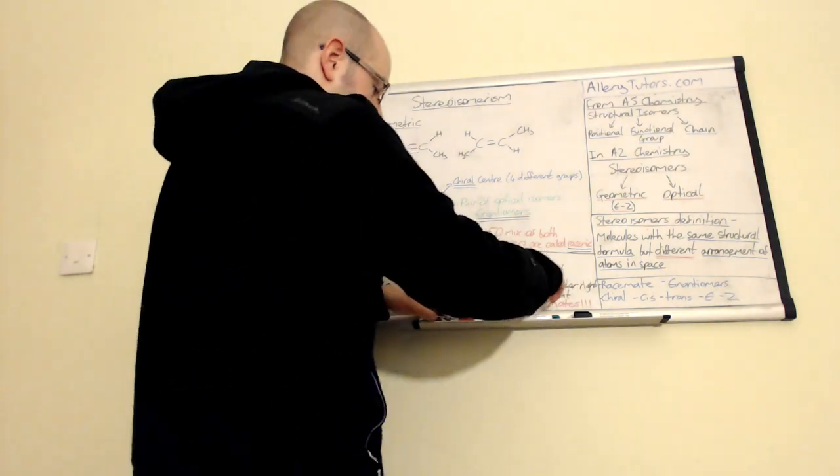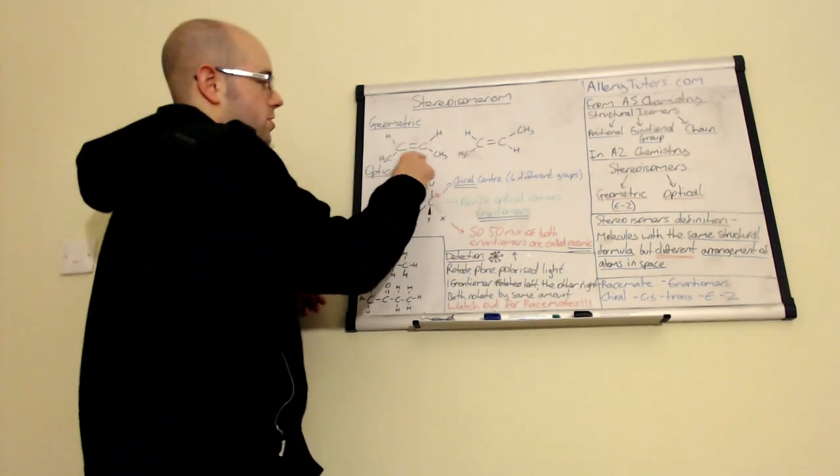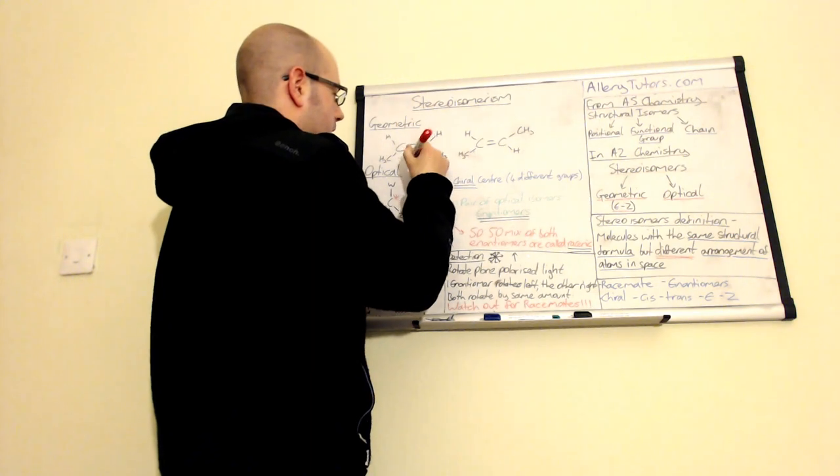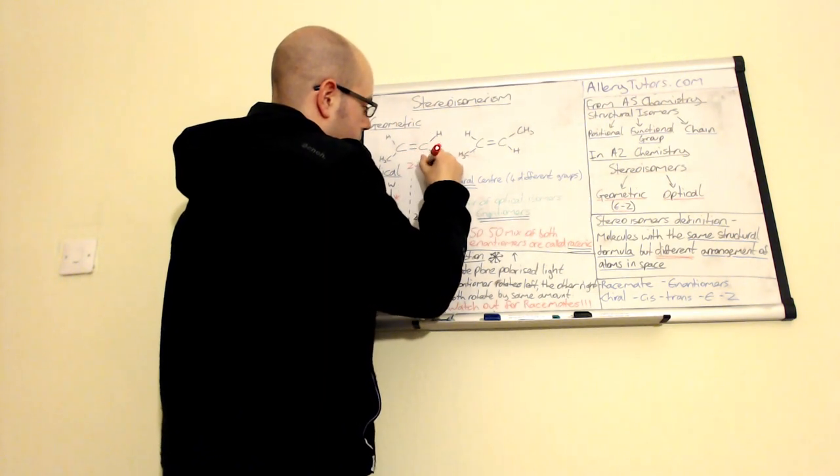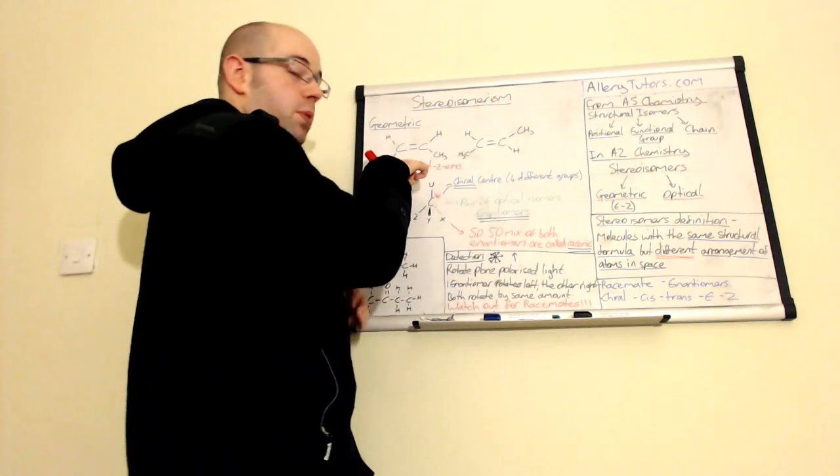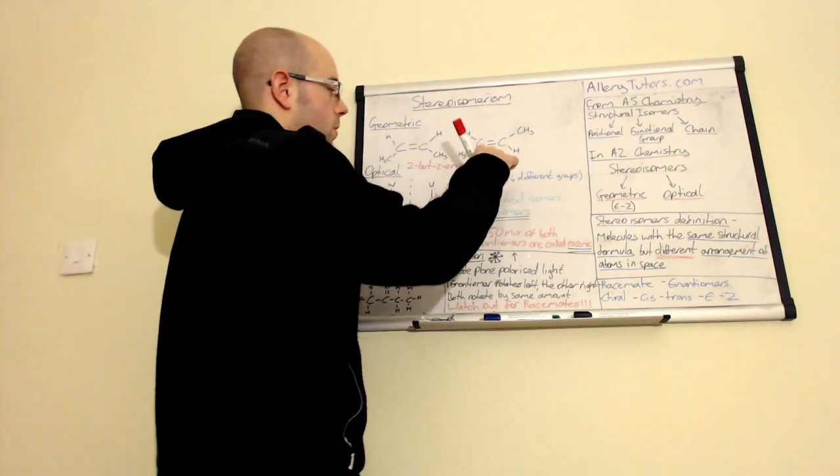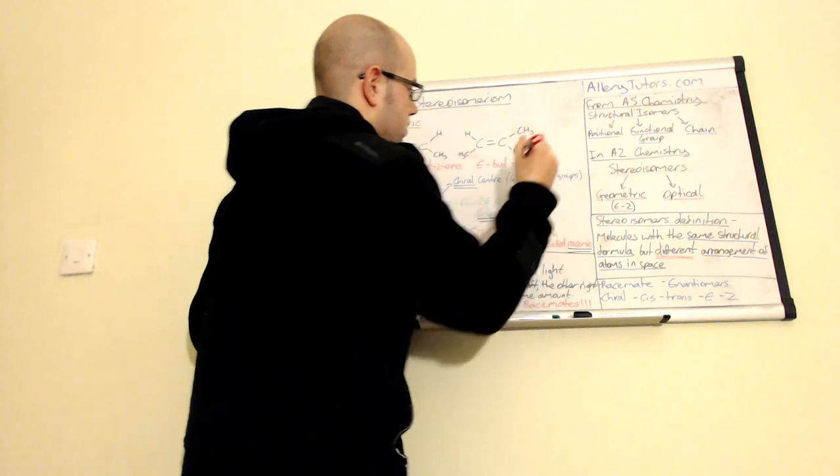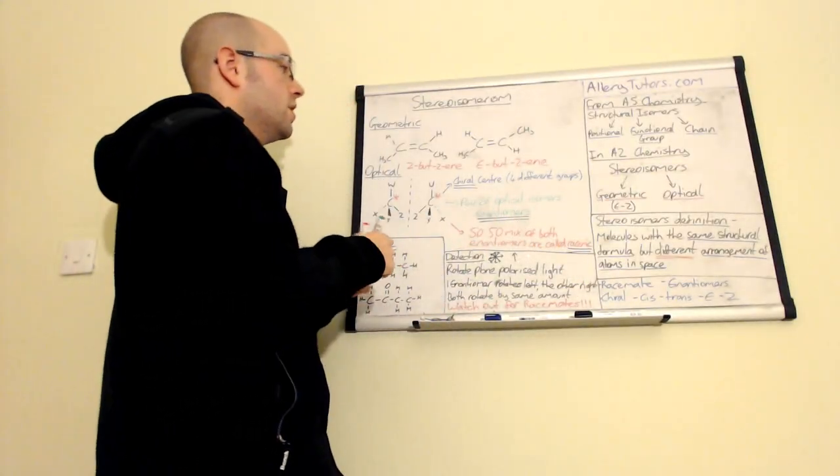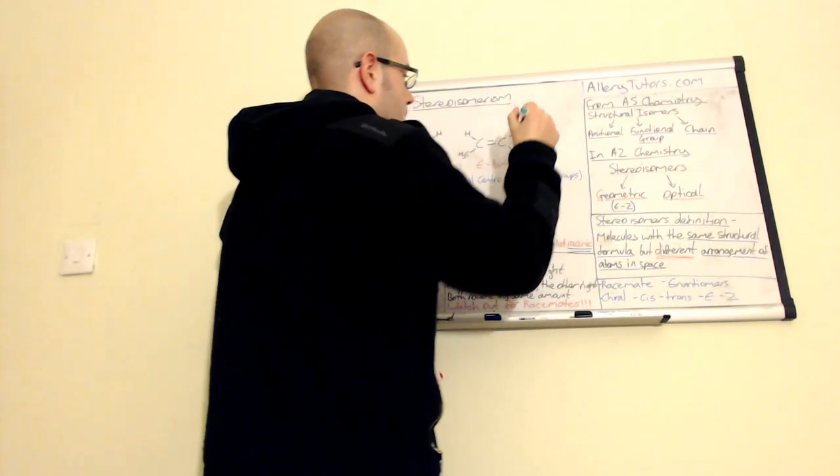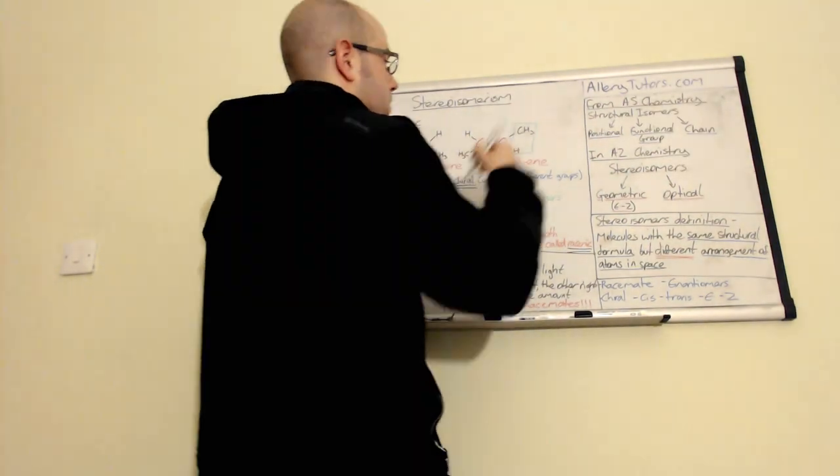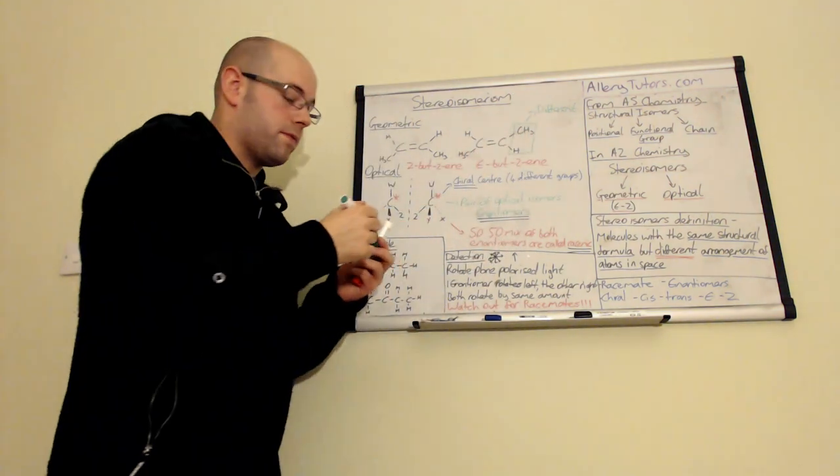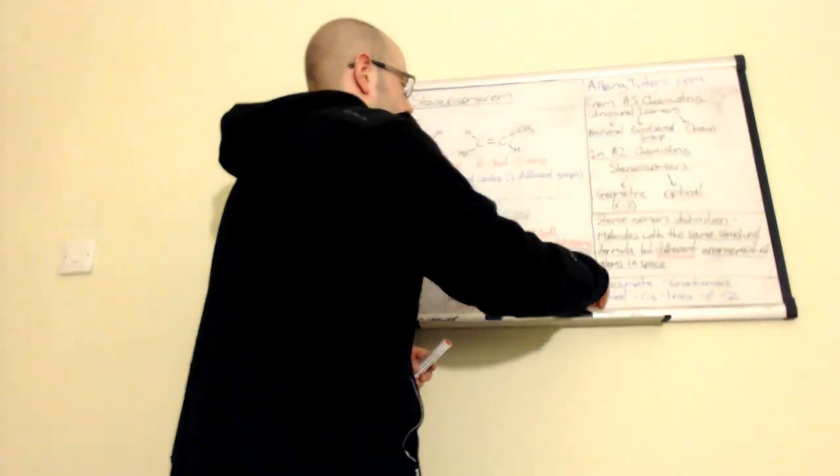That will not form an E-Z conformation because we have two groups which are the same on the same carbon. So we must have a formation where we have two different groups on one carbon. So if we look at these particular examples here, this one has got two CH3 groups on the bottom, so that would be, because these are on the same side, we call this Z-but-2-ene, whereas this one is the isomer and we call this E-but-2-ene. It's very important that we must have two different groups. These have got to be different on that side. We can't have two CH3s on there. And if you don't have two different groups there, you cannot form E-Z.